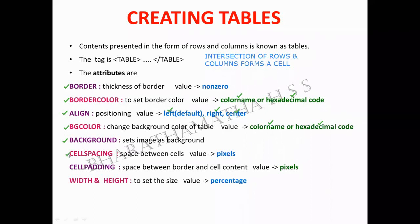Cell spacing is the space between two cells, both vertically and horizontally. Cell padding is the space between the border of the cell and the content inside it. These values are always given in pixels.